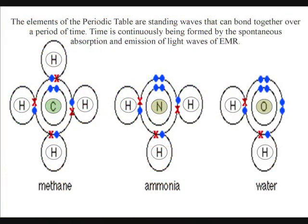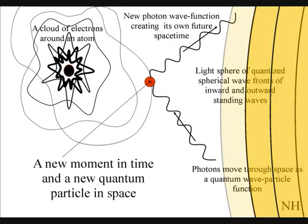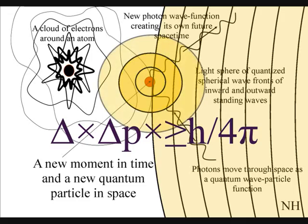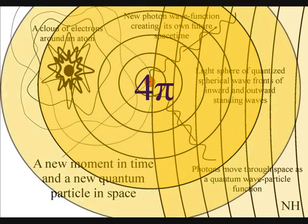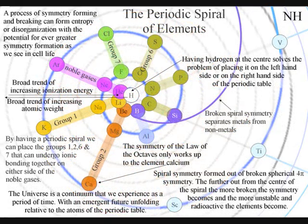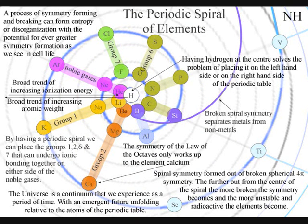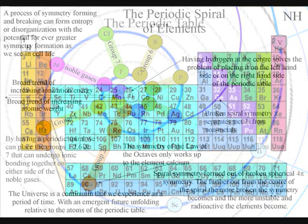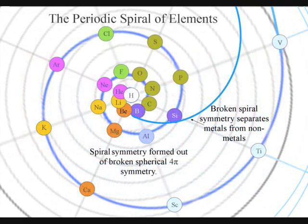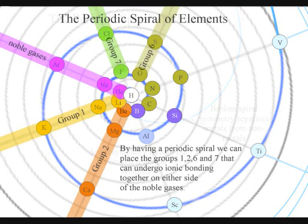In this theory, the elements of the periodic table are standing waves over a period of time. Time is continuously being formed by the spontaneous absorption and emission of light waves of electromagnetic radiation. This forms a universal process of spherical symmetry forming and breaking that produces the spiral patterns we see in everyday life, with each element having a set position forming the curvature of these spirals — hydrogen at the center, and the noble gases and different groups of elements radiating out like spokes from the center of a wheel. By placing hydrogen in the center of a spiral, we solve the traditional problem of where to place hydrogen and helium.